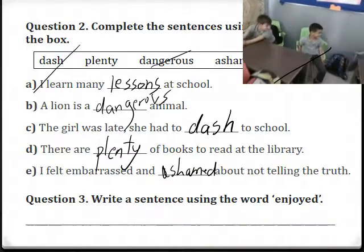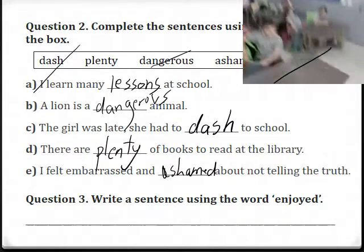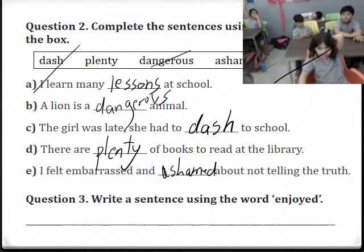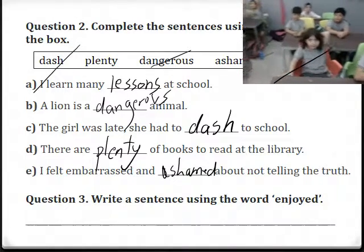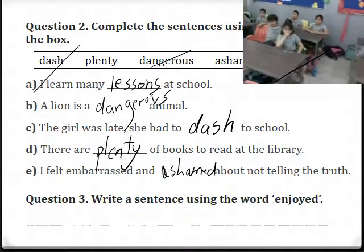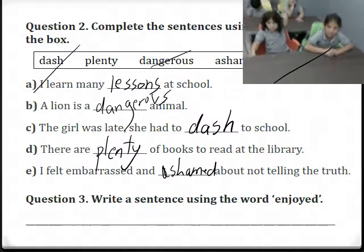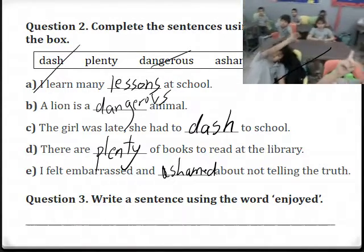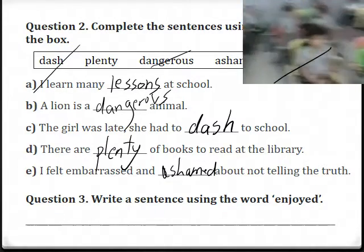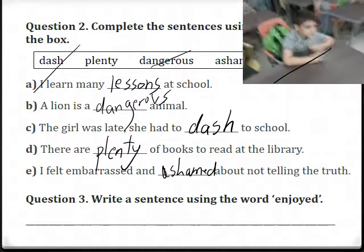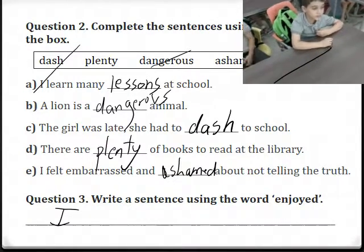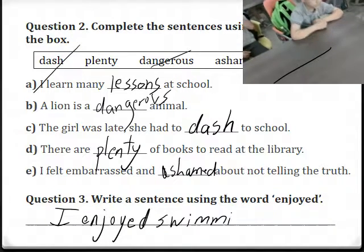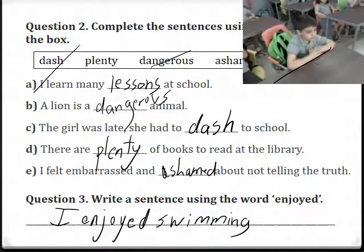Question three. Write a sentence using the word 'enjoyed.' What's the meaning of enjoyed? When you enjoy something, you like it — you feel happy doing it. A sentence using this word: 'I enjoyed swimming.' Very good. You can also say 'I enjoyed swimming at the beach.'